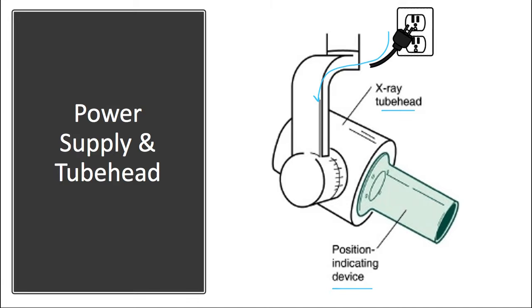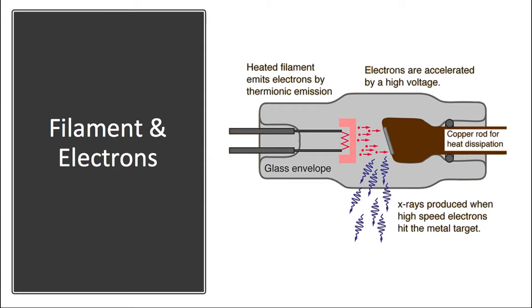The x-ray tube or tube head is the housing in which the actual x-rays are created. So let's take a look inside. We have a circuit that heats up a filament which burns off electrons. These electrons contact a tungsten target that produces the actual x-rays. This copper rod is used to dissipate the heat and a leaded glass envelope surrounds and insulates the entire assembly.